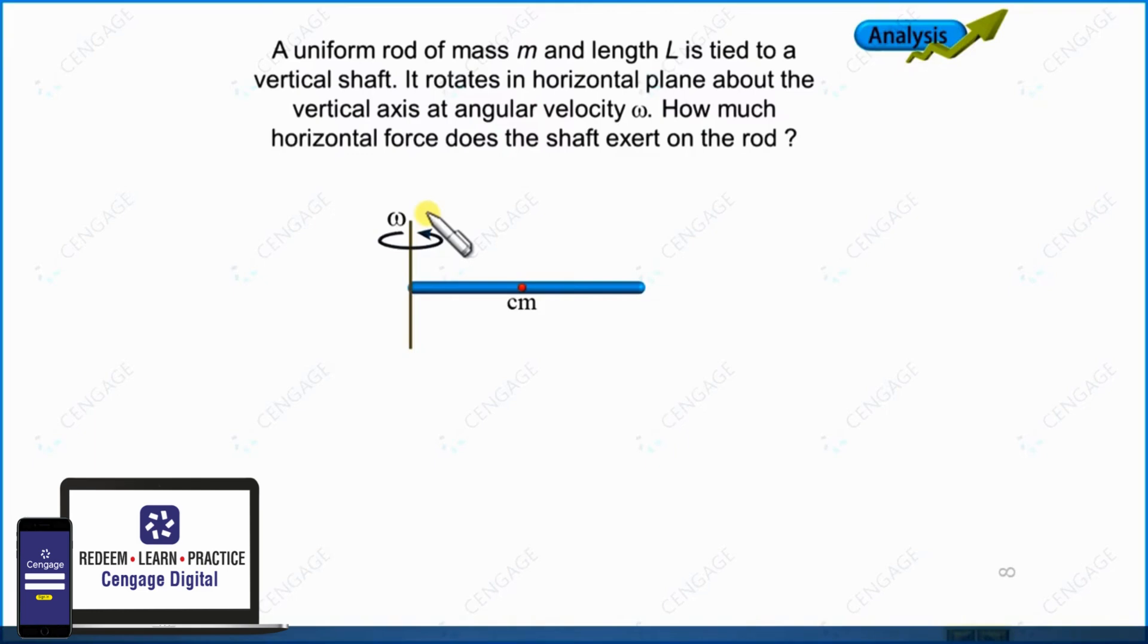For making a free body diagram, we need to isolate the shaft and rod. That's why we are going to select the rod as a system.